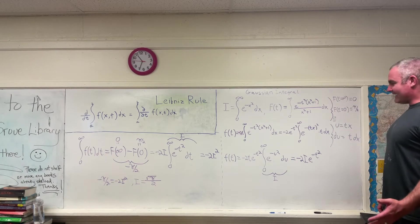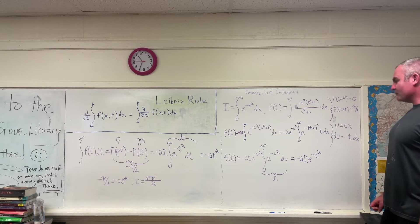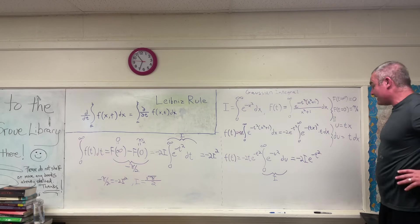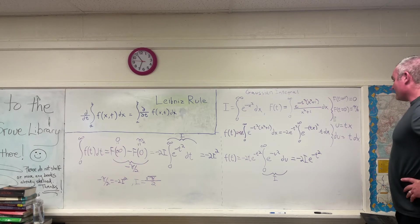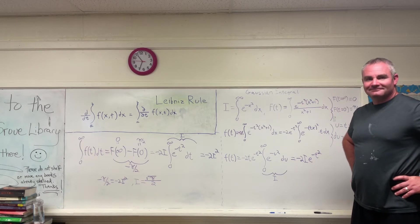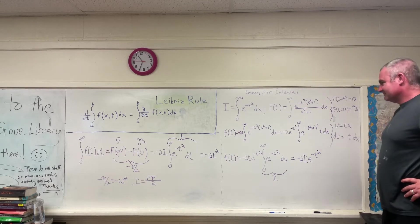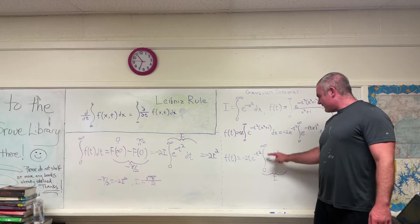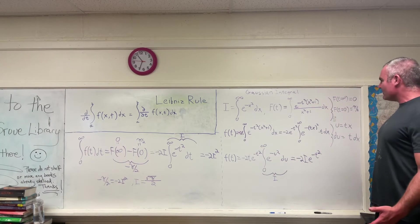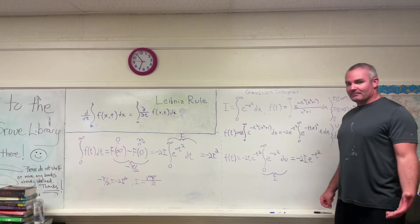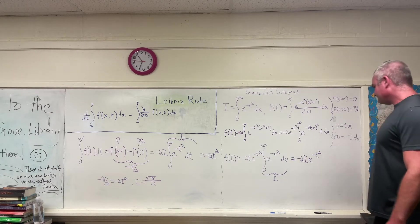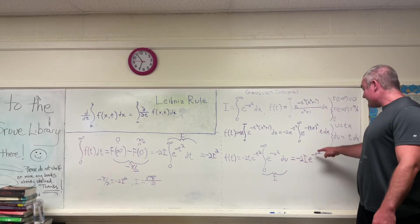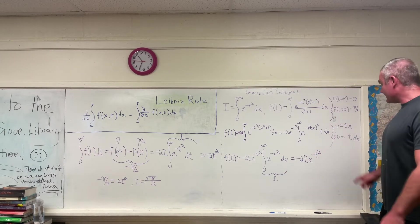Our function of T is equal to negative 2T times e to the negative T squared times the integral from zero to infinity of e to the negative U squared DU. Notice that this part — the integral from zero to infinity of e to the negative U squared DU — is I. The variable name doesn't matter. So we have f of T being equal to negative 2I times e to the negative T squared. That's our function of T.